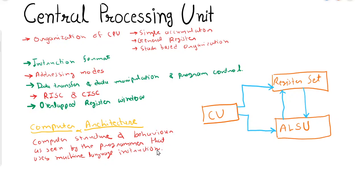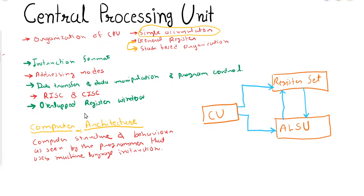This was the introduction. In the next video, we will discuss computer organization and the various organizations of CPU — single accumulator organization, where there is one accumulator and the rest are special-purpose registers, then general register organization, then stack-based organization, and then instruction format, addressing modes, data transfer, data manipulation, program control instructions, RISC and CISC, and finally overlap and register windows.